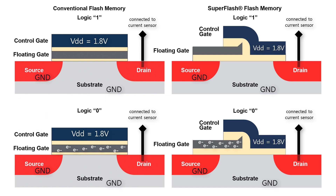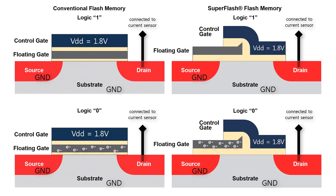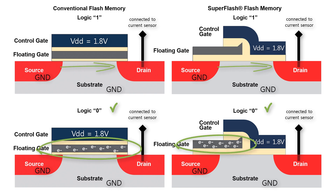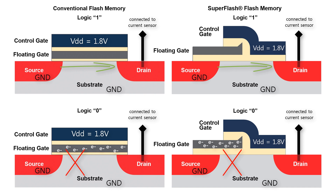The cells we wanted to write or program as a logic one just never had the 10 volts applied, so they don't have trapped electrons. When read, those will allow a current to flow through the memory cell, which will be interpreted as a logic one. The cells that did see the 10 volts have trapped electrons. Those trapped electrons will block the gate voltage enough to prevent current from flowing through the transistor, and that lack of current will be read correctly as a logic zero.